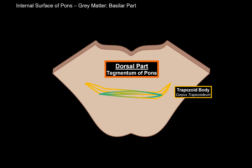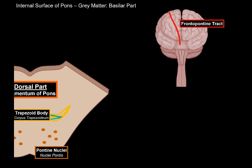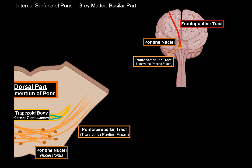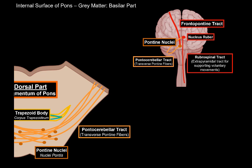The only grey matter in the basilar part is the pontine nuclei. These are very significant: a tract originating outside the primary motor cortex from the frontal lobe, called the frontopontine tract, descends and synapses with the pontine nuclei. These fibers then go to the cerebellum through the middle cerebellar peduncles as the pontocerebellar tracts — crossing to the other side — and then travel to the red nucleus of the midbrain as the cerebellorubral tract, before descending as the rubrospinal tract to support voluntary movements.